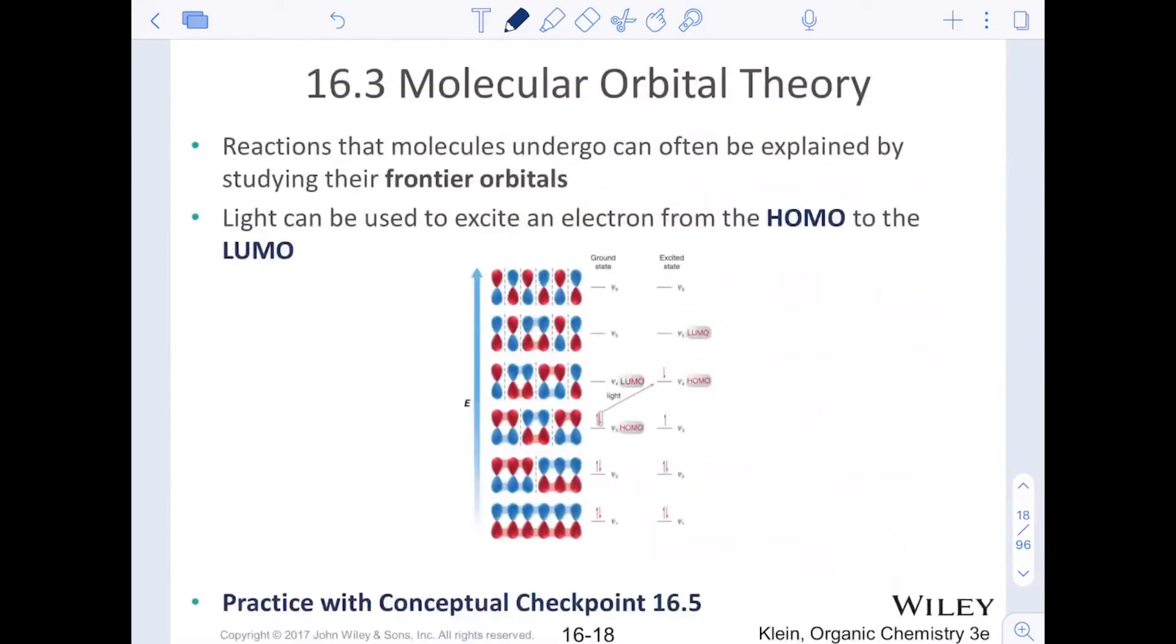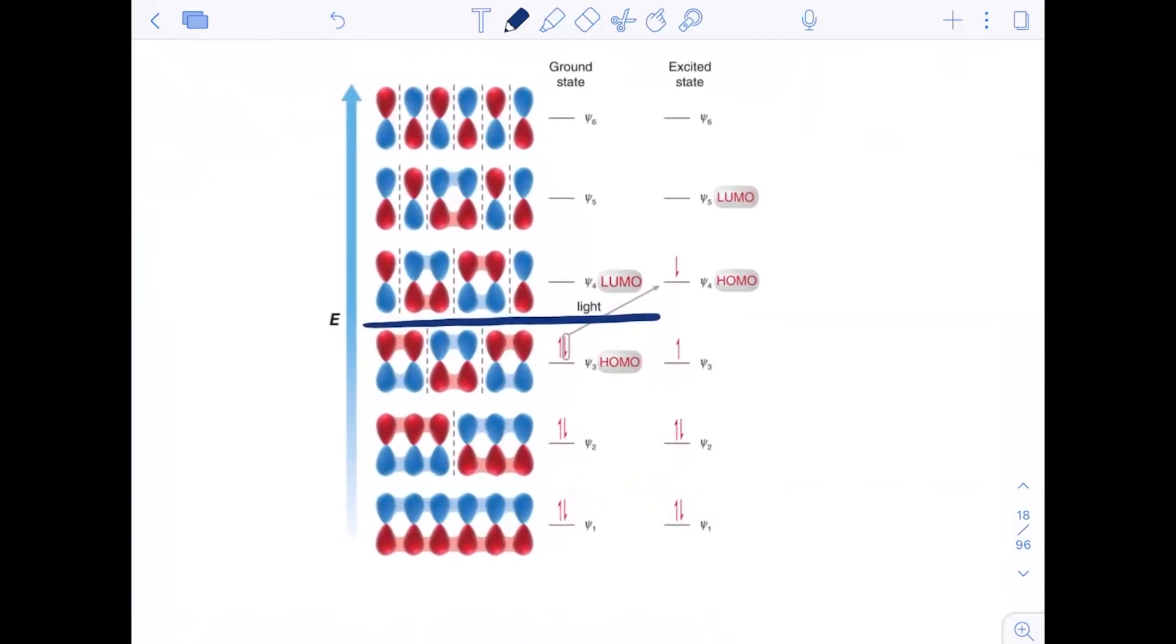Now, the reactions that molecules can undergo can often be explained by studying their frontier orbitals. Their frontier orbitals are going to be the ones that are in the middle from the field. I'm going to put a line right here. We're going to zoom in. This is the highest occupied molecular orbital, or HOMO. HOMO stands for highest occupied molecular orbital, MO.